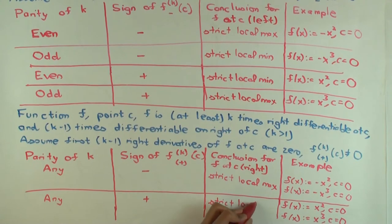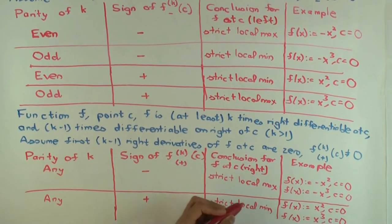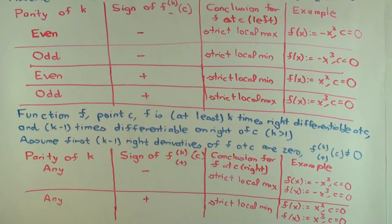So why is it that for the right side, it doesn't matter whether k is even or odd, whereas for the left side, it does matter? I don't know.